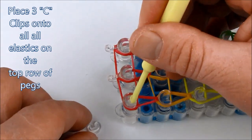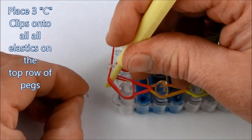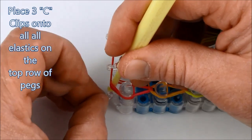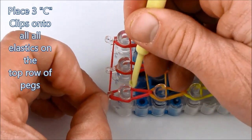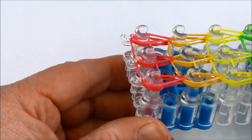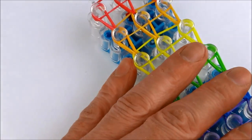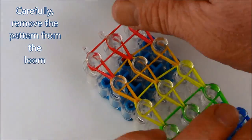These clips that we're putting on are just temporary, just to hold the pattern while we remove it from the loom. Once the clips are attached we can remove the entire pattern from the loom.